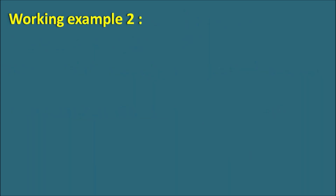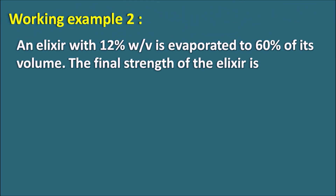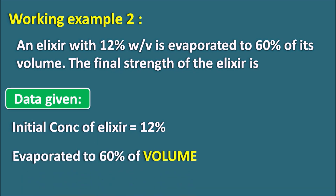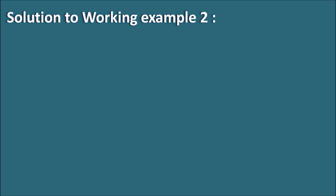Let us go with working example 2. An elixir with 12% weight by volume is evaporated to 60% of its volume. What is the final strength of the elixir? Here we have only one solution — the elixir. The initial concentration is 12% weight by volume, it is evaporated to 60% of its volume, and we must calculate the final concentration.